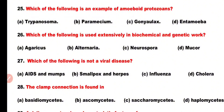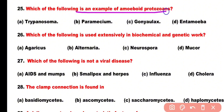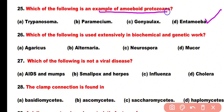Question number 25: Which of the following is an example of an amoeboid protozoan? Options: Trypanosoma, Paramecium, Gonyaulax, or Entamoeba. Correct answer is option D. Entamoeba is an example of amoeboid protozoans among the given options.